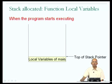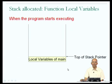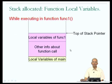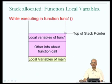When your program starts executing, there could be some local variables on the stack associated with the function that your program starts executing with. If you are writing a C program, that function is the main function. At the bottom of the stack are the local variables of main. Let us suppose that the main function calls a function called func1. When func1 is called, space will be allocated on the stack for the local variables and parameters of func1.